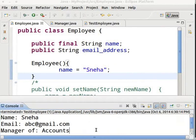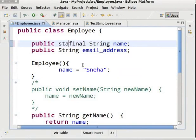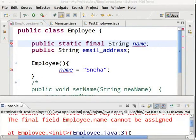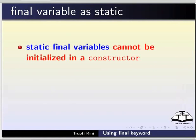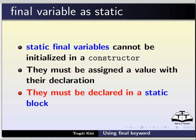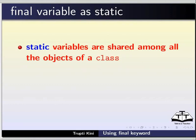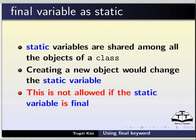Now we will learn about final static variables. Come to the final variable in the Employee class and add the static keyword before final. Save and run — we get an error: the final field Employee.Name cannot be assigned. This is because static final variables cannot be initialized in the constructor; they must be assigned a value with a declaration, or they must be declared in a static block. Static variables are shared among all objects of a class, and creating a new object would change the static variable, which is not allowed if the variable is final.